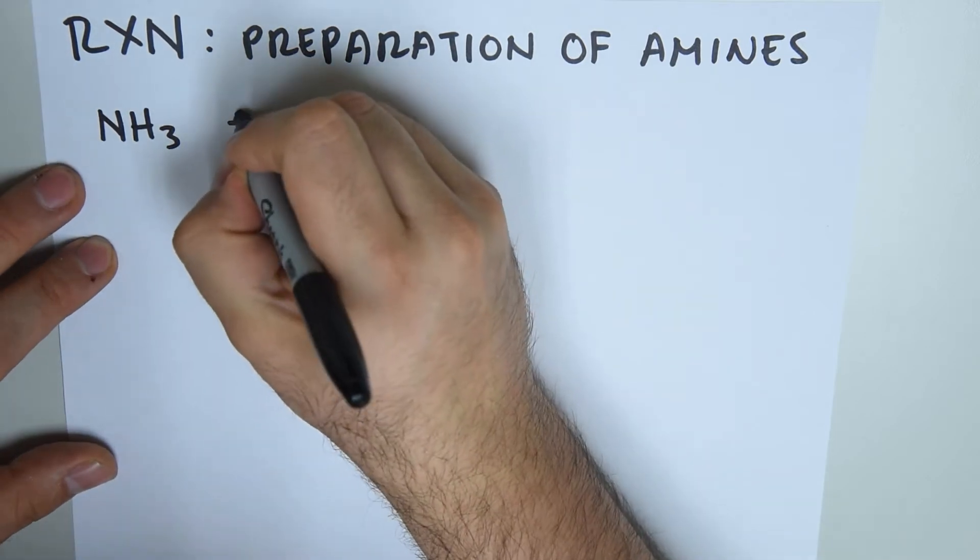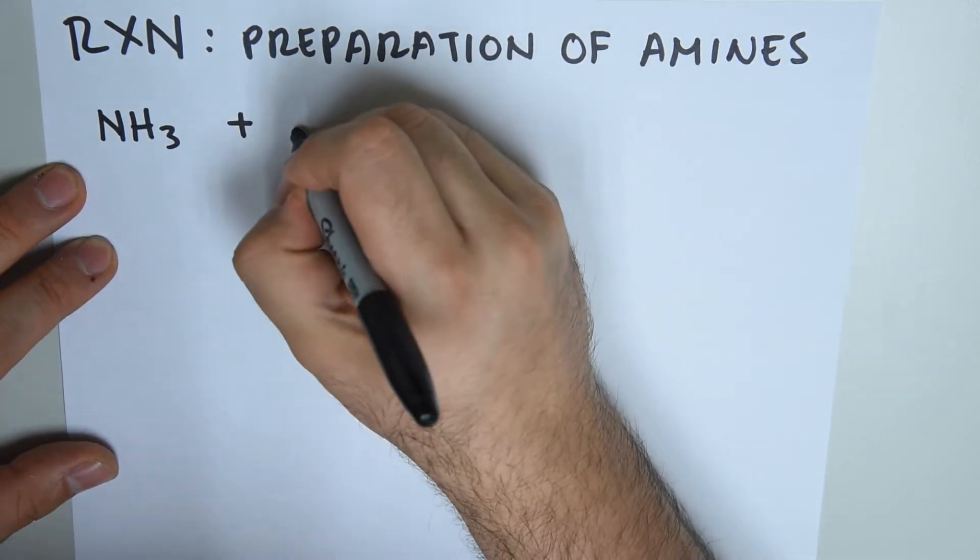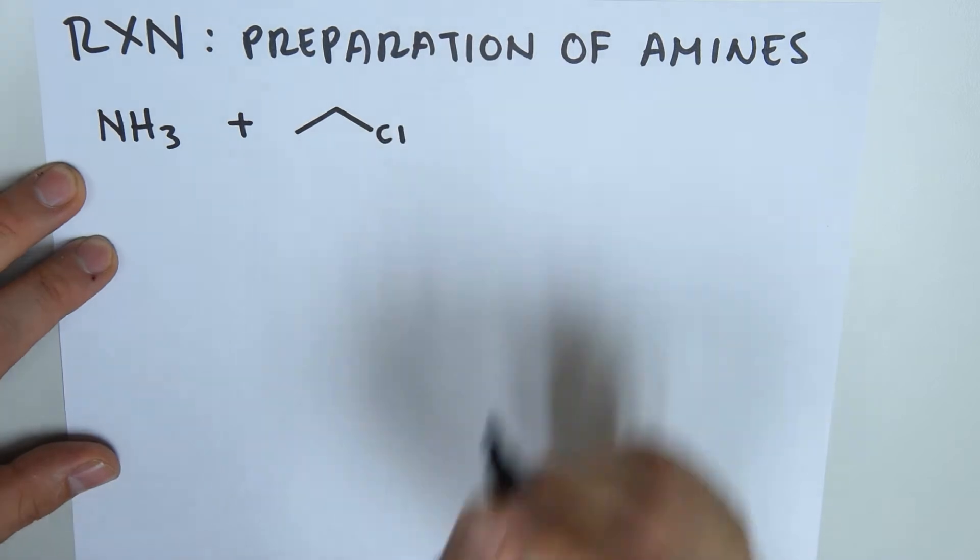And we're going to add an alkyl halide, which is basically a carbon chain with any halogen attached to it. What do we need for this reaction to occur? We don't need any catalysts.